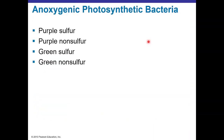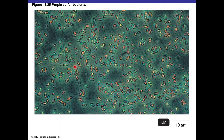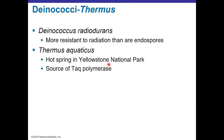Anoxygenic photosynthetic bacteria can be subdivided into sulfur and non-sulfur bacteria. Purple and green designations are based on pigments. Sulfur bacteria use hydrogen sulfide and non-sulfur bacteria use organic compounds as energy sources. Purple sulfur bacteria appear very colorful in light microscopy.